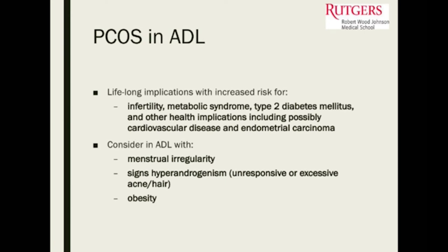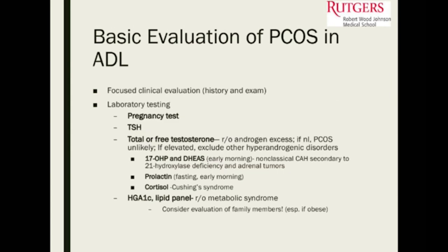Start thinking about polycystic ovarian syndrome in an adolescent who presents with menstrual irregularities, signs of hyperandrogenism — excessive hair, excessive acne — and who is obese. Focus on the history and exam because there will be clues: the hair, the acne, acanthosis in the back of the neck. These may be suggestive of PCOS.